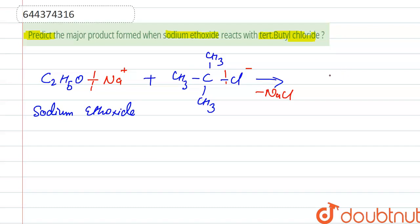Let's see here, that is C with CH3, CH3, CH3, and here OC2H5 gets attached with this carbon atom and NaCl gets released. So this compound which is formed is ether. This is the product which is formed.